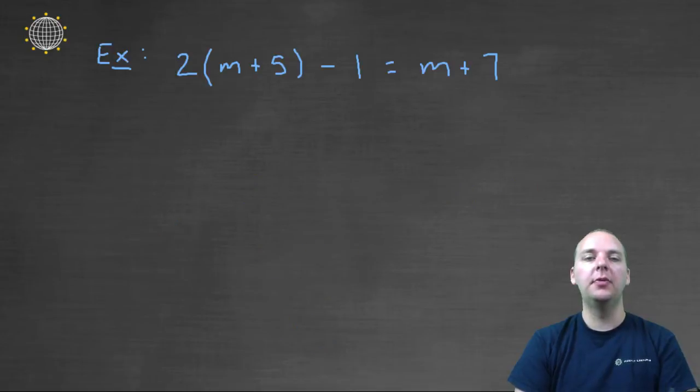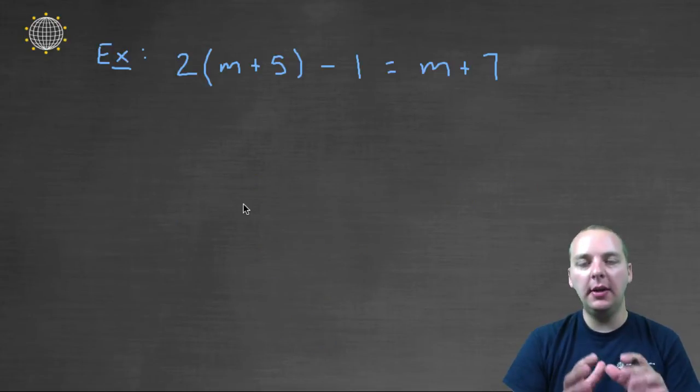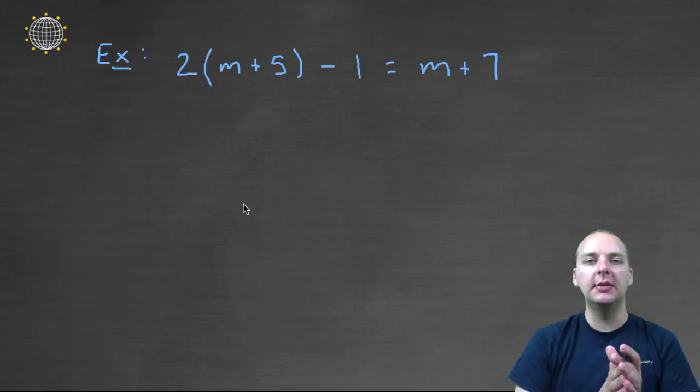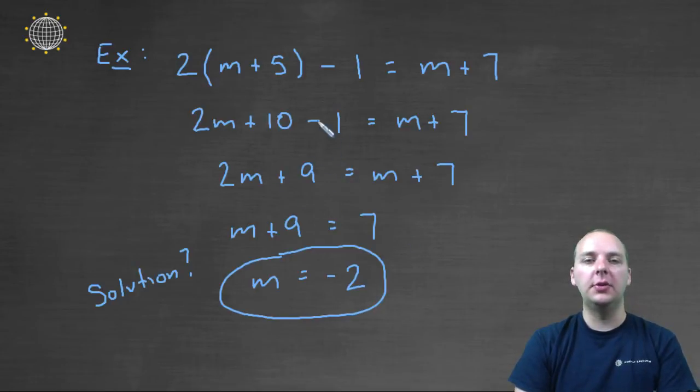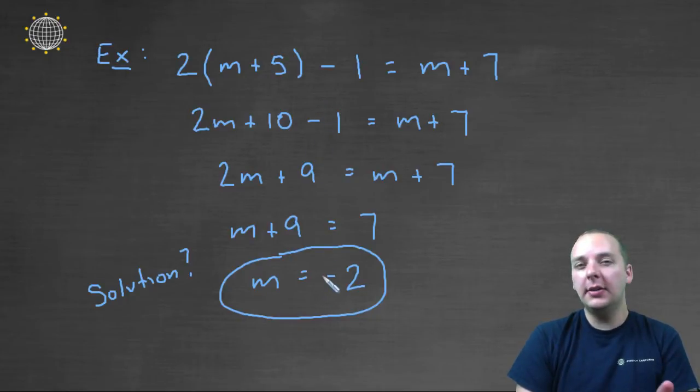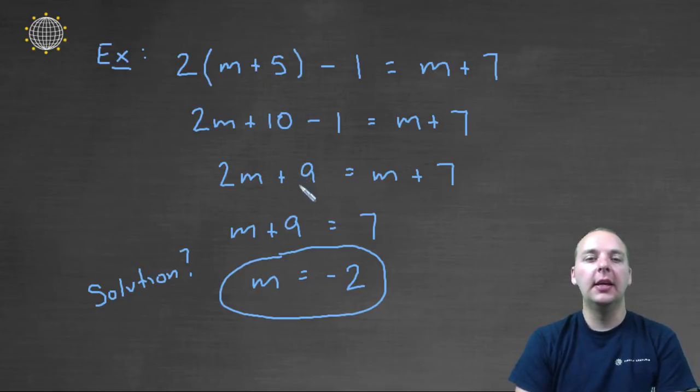Let's look at a couple of other examples. My point in this video is not to work a bunch of exercises, but simply to verify the solution. Here we have a typical example: 2 times (m+5) minus 1 equals m+7. I did all the algebra steps here, and I think negative 2 is the right answer. How do I know it's the right answer? I had lots of distributing and like terms. I don't want to just hope my answer is right.